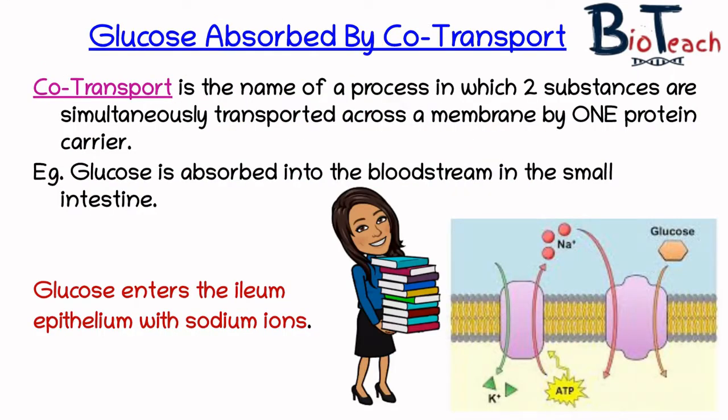The name co-transport is usually given to the process in which these two substances are simultaneously transported across the membrane by one protein carrier, and the co-transport of glucose takes place in the small intestine where absorption takes place.